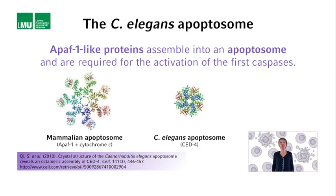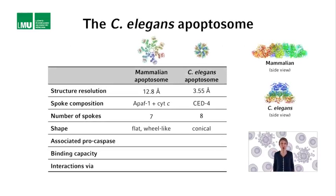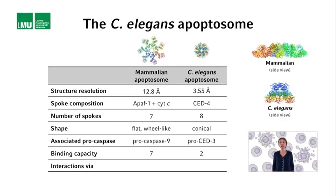Interestingly, the C. elegans apoptosome turns out to be octomeric - it is a circular structure with eight rather than seven spokes. Furthermore, rather than a flat wheel-like form as had been suggested by the structural studies on the mammalian apoptosome, the crystal structure of the C. elegans apoptosome suggests a funnel or cone-shaped form. And finally, rather than up to eight molecules of PRO-CED-3, the C. elegans apoptosome appears to bind only two PRO-CED-3 molecules. This binding is mediated through the CARD domains present in both PRO-CED-3 and CED-4. The two PRO-CED-3 molecules bound per apoptosome are presumably forced to dimerize, which then leads to their cleavage in trans and their full activation.